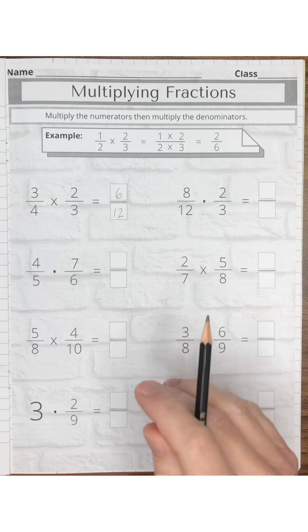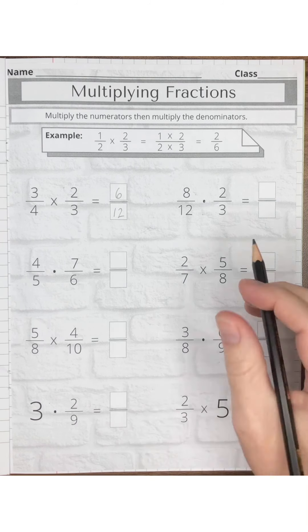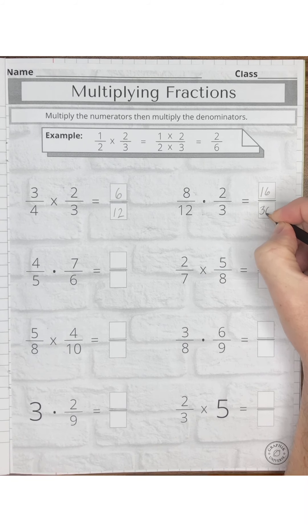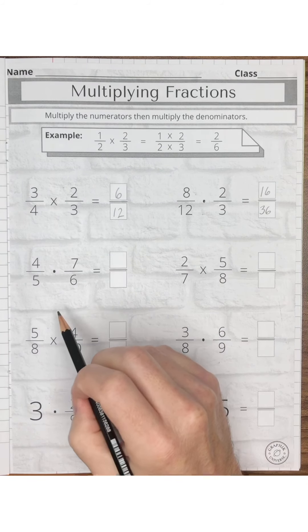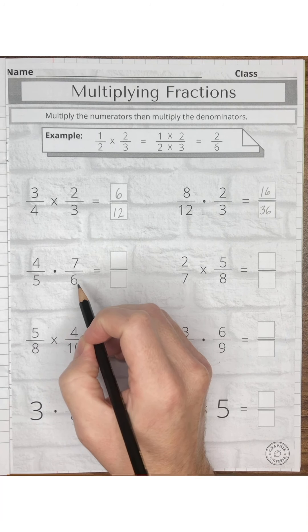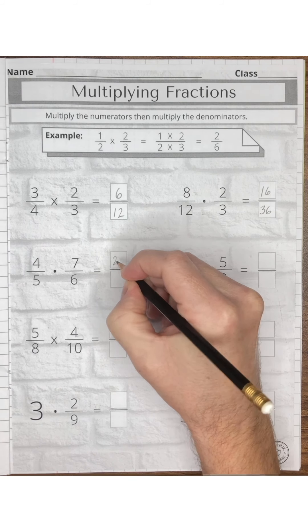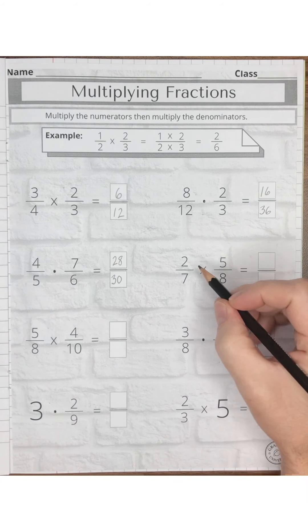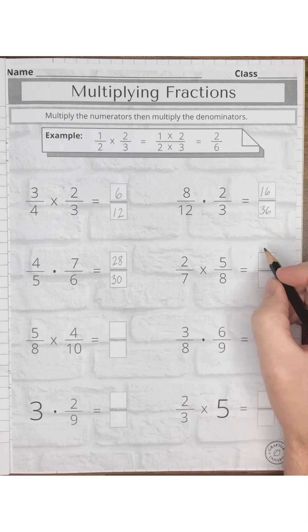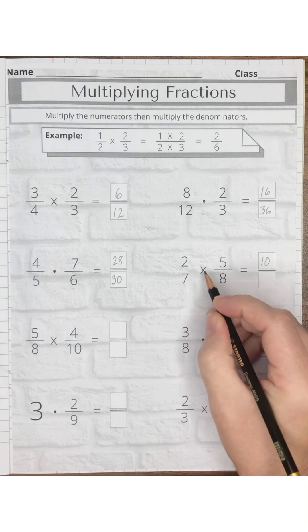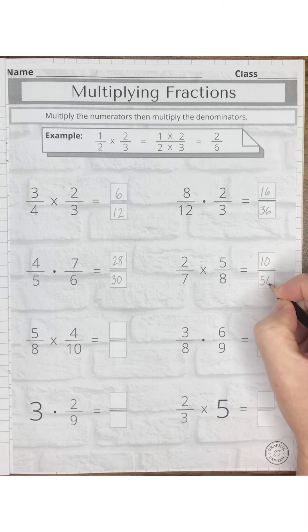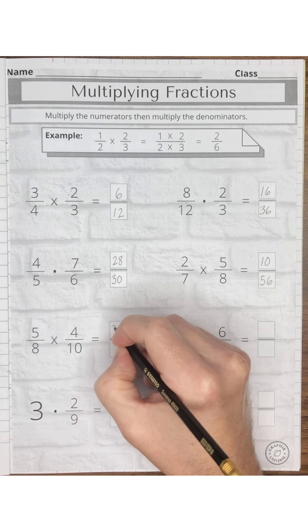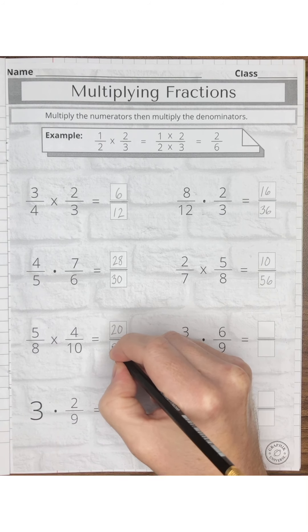For eight-twelfths times two-thirds: 8 times 2 is 16 and 12 times 3 is 36. Next problem: four-fifths times seven-sixths. 4 times 7 is 28 and 5 times 6 is 30. Next problem: two-sevenths times five-eighths. 2 times 5 is 10 and 7 times 8 is 56. Five-eighths times four-tenths: 5 times 4 is 20 and 8 times 10 is 80.